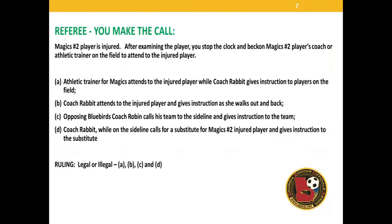You're the referee — you make the call. Magic player number two is injured. After examining the player, you stop the clock and beckon the player's coach or athletic trainer to the field. The following may happen: A) the athletic trainer for the Magics attends the injured player while coach Rabbit gives instructions to players on the field; B) coach Rabbit attends the injured player and gives instructions as she walks back to her bench; C) opposing Bluebirds coach Robin calls his team to the sideline and gives them instructions; D) coach Rabbit on the sidelines calls for a substitute for the injured Magic player and gives instructions to the substitute. Ruling: Legal for A, B, C, and D.